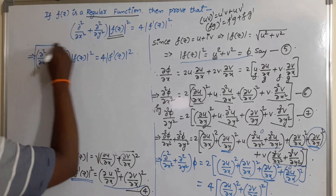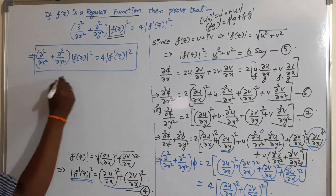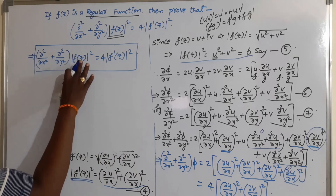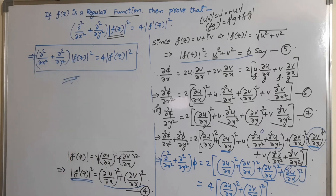In this way we can prove the given result. This is called an identity in analytic functions. In the next video I will give another identity.